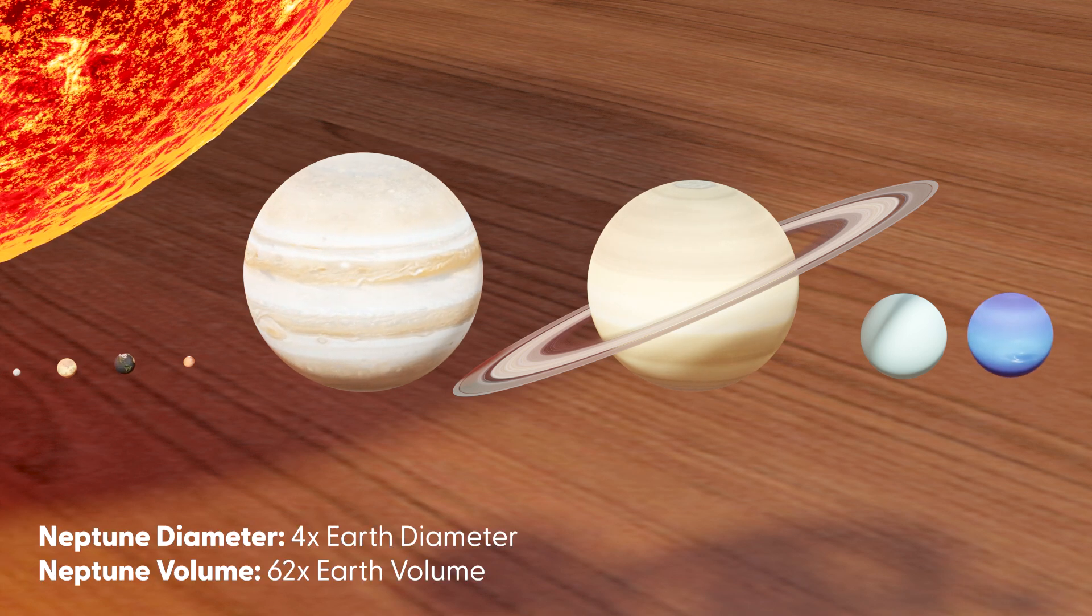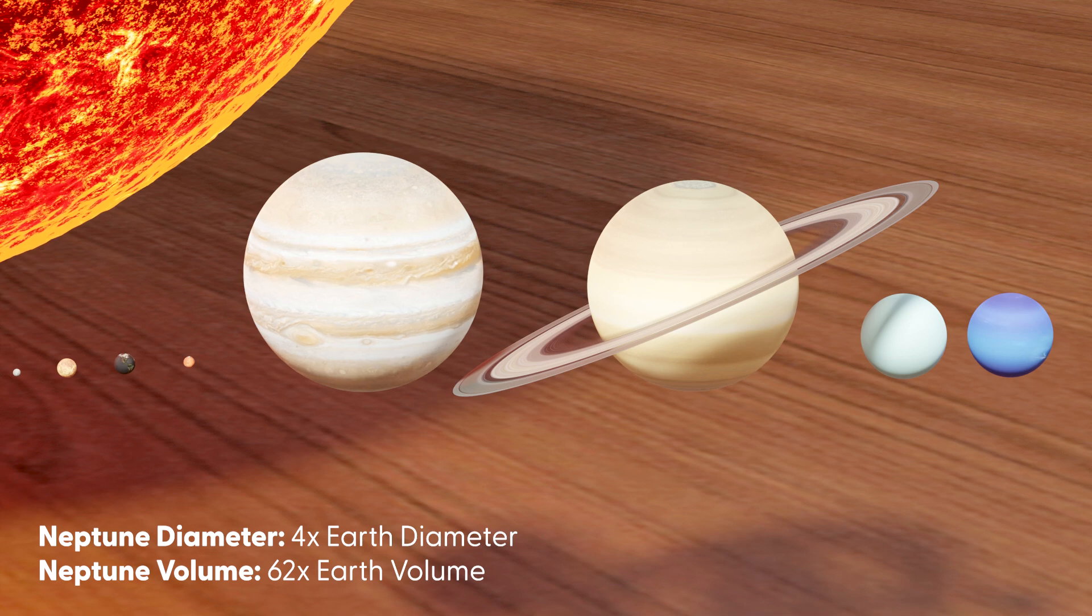Neptune is almost the size of Uranus, with just 1,400 kilometers shorter in diameter.